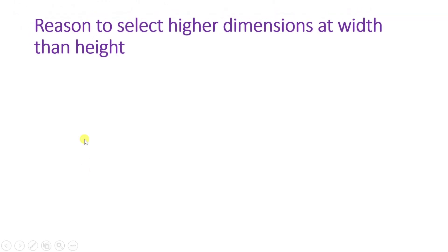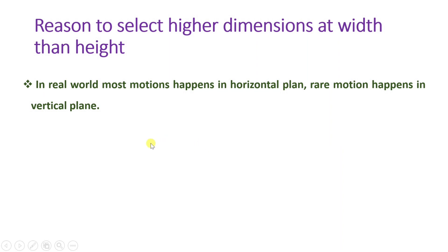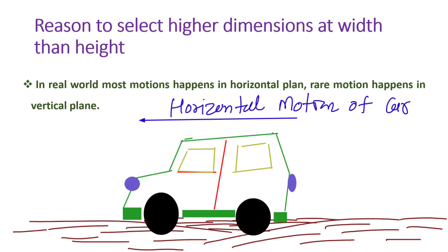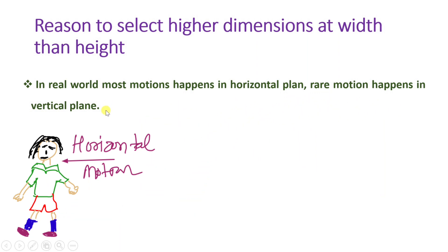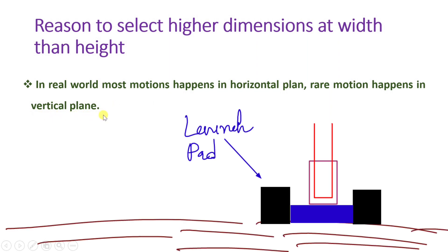Now let us discuss a few reasons why we select a higher horizontal dimension. In both 4 to 3 and 16 to 9, horizontal dimensions are greater than vertical dimensions. In the real world, almost all motions happen in the horizontal plane — cars moving on roads, people walking and running. Vertical motions like a rocket launching are very rare.